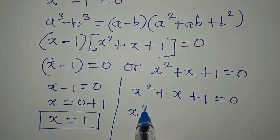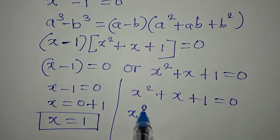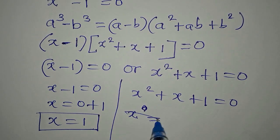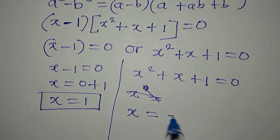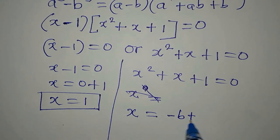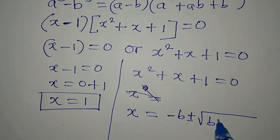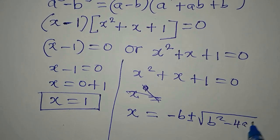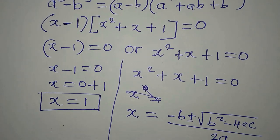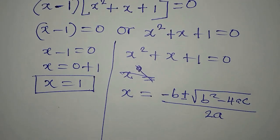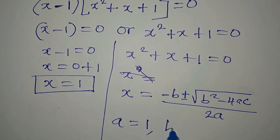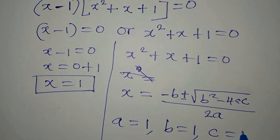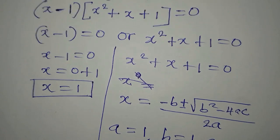Now to continue, we go over to x squared plus x plus one equals zero, and we use the quadratic formula. The formula is x equals minus B plus or minus the square root of B squared minus four AC, all over two A. From this quadratic equation, what is A, B, and C? Our A is one, our B is one, and our C is also one — so everything is one.